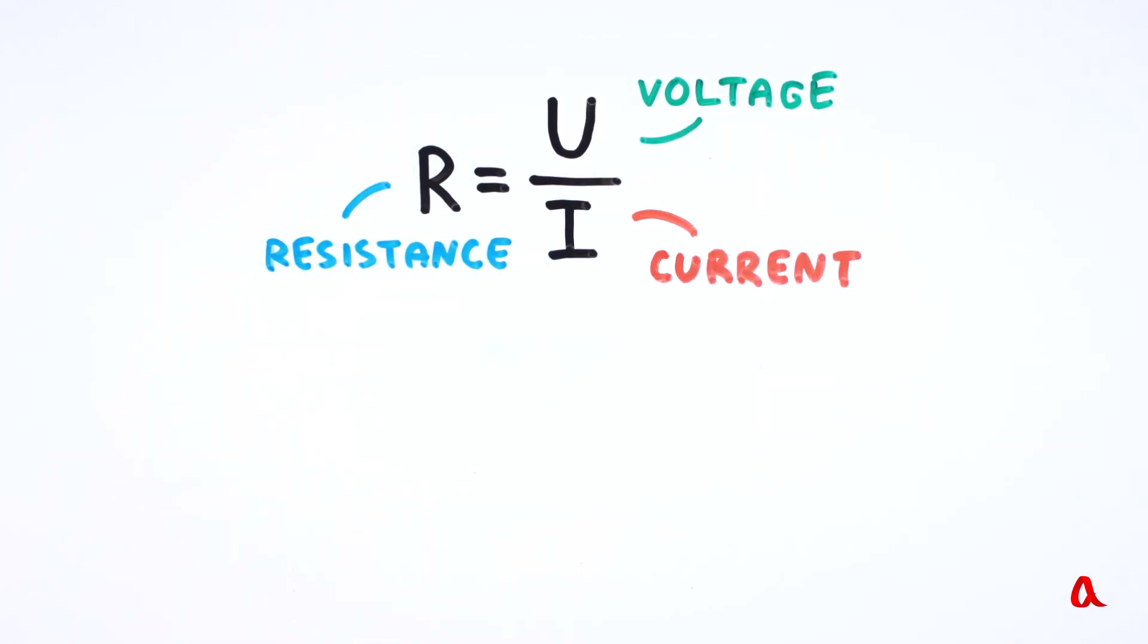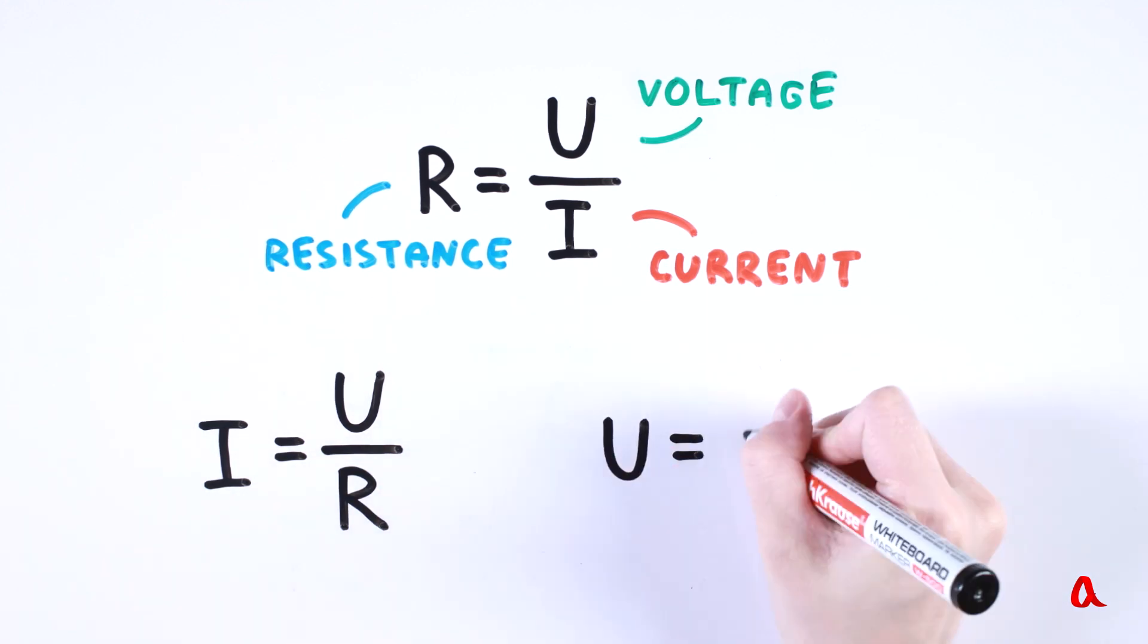This formula for Ohm's law can be rewritten in two other ways. In order to find the current, we need to divide the voltage by the resistance. In order to find the voltage, you have to multiply the current by the resistance.